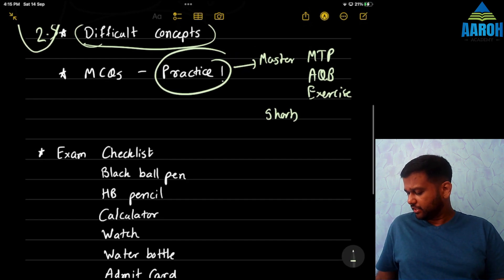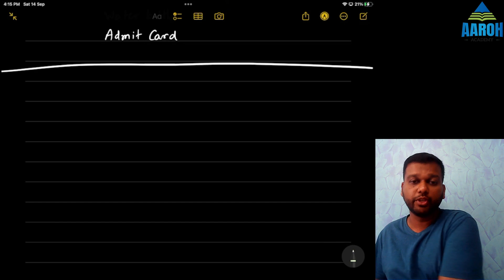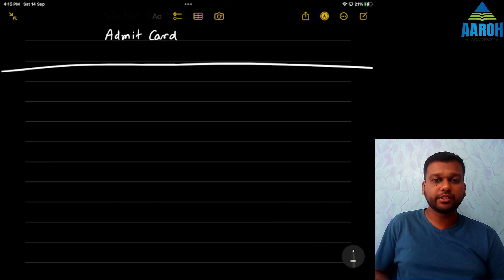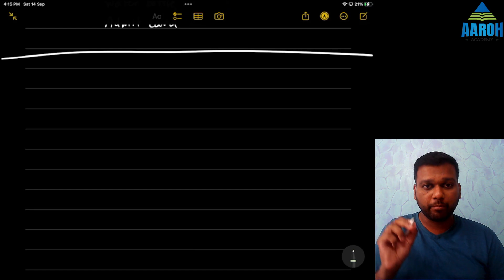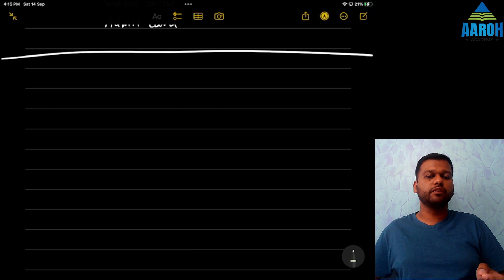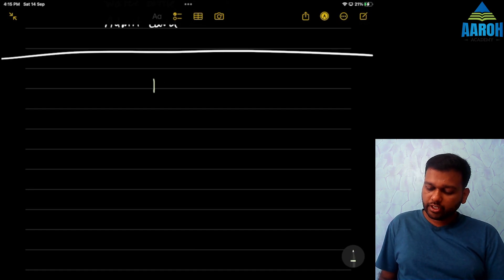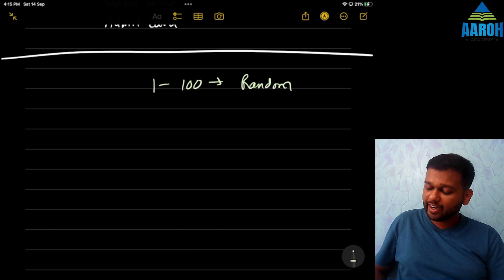And then, we have to discuss checklist. But before that, let's see what to do at the time of exam. So when you go for the exam, when you are sitting in the exam hall, most important thing is when you get paper with you, there is no reading time for maths. So when you get the question paper and answer sheet, immediately start solving. Questions 1 to 100 are all in random order. It is not like one chapter will come first, then next chapter, then next chapter. Not like MTP. All are random.